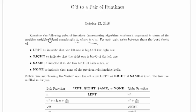For each pair, write between them the best choice: LEFT to indicate that the left one is O of the right one, RIGHT to indicate that the right one is O of the left one, SAME to indicate that the two are big theta of each other, or NONE to indicate that none of the previous relationships holds.